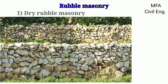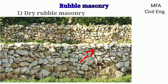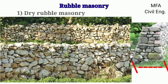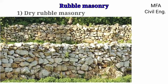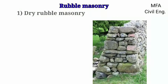Dry rubble masonry is the most inferior type of masonry in which either quarry, undressed, or dressed stones are used without the help of any mortar. Bigger pieces of stone are arranged at the bottom in such a way that they have a minimum of void and proper interlocking with each other. Small pieces of stone are used at the top, and these walls are generally broader at the bottom and thinner at the top. This type of masonry is used for the construction of retaining walls and boundary walls of a building at the quarry site.